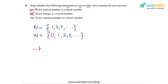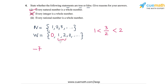The third statement says every rational number is a whole number. This statement is false and it's easy to see why. For example, take the rational number 3/2, which lies between 1 and 2. In the set of whole numbers, there is no number between 1 and 2, so clearly not every rational number is a whole number.